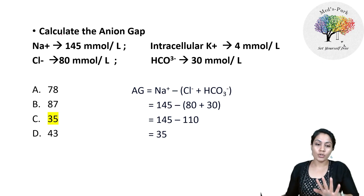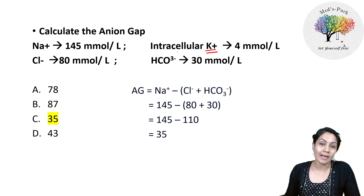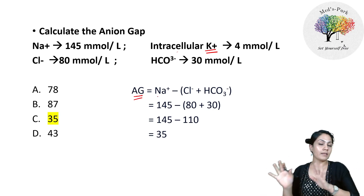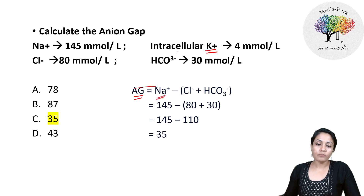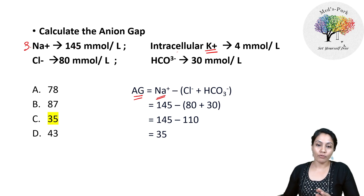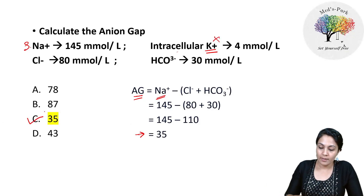The question was about anion gap, and the potassium value given was intracellular. The values we consider are serum values, not intracellular. The anion gap formula is cation minus anion. Sodium is taken into consideration since serum sodium was 145, but intracellular potassium is not considered. Chloride was 80 and bicarbonate 30. Putting in the values, the answer is 35.